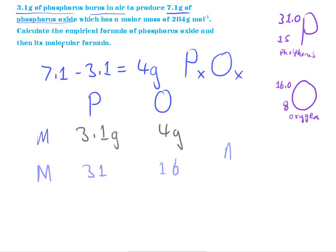And using the formula, number of moles equals mass divided by molar mass, we can work out the number of moles for each of these. So, the number of moles would be, for this it would be 3.1 divided by 31, which would be 0.1. And for this it would be 4 divided by 16, which, you know, that's basically a quarter, so it's 0.25.